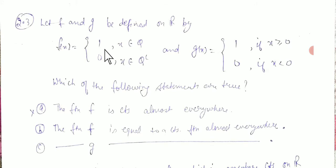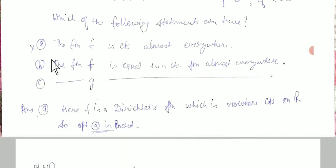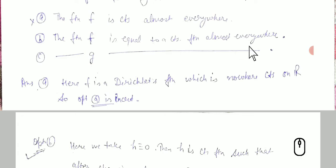The third question defines two functions on ℝ: f(x) = 1 when x is rational and 0 when x is irrational (the Dirichlet function), and g(x) = 1 when x ≥ 0 and 0 when x < 0. We need to determine which statements are true. The first option states that f is continuous almost everywhere — this option is incorrect, as f is continuous nowhere.